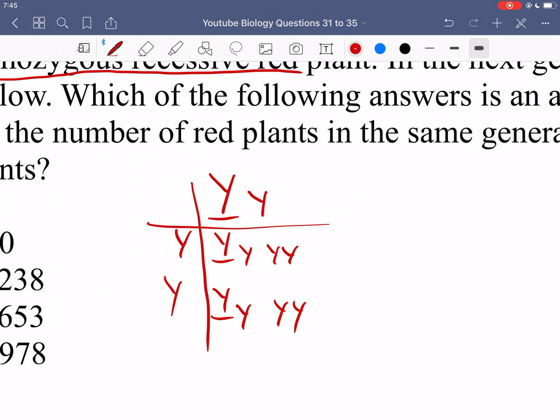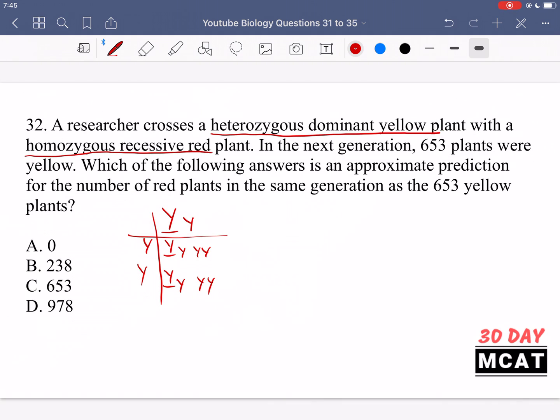Those are the offspring. Half of them are going to be heterozygous and the other half are going to be homozygous recessive, which means that half of them, if they're heterozygous, they're going to have the yellow phenotype. And since we were told that we get 653 yellow plants, that means that this is half of the offspring.